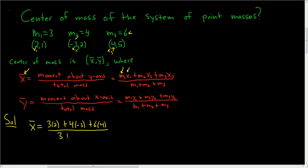So 3 plus 4 plus 6. So this is equal to 6 minus 12, plus 24, divided by, let's see, 3 plus 4 is 7, plus 6 is 13.